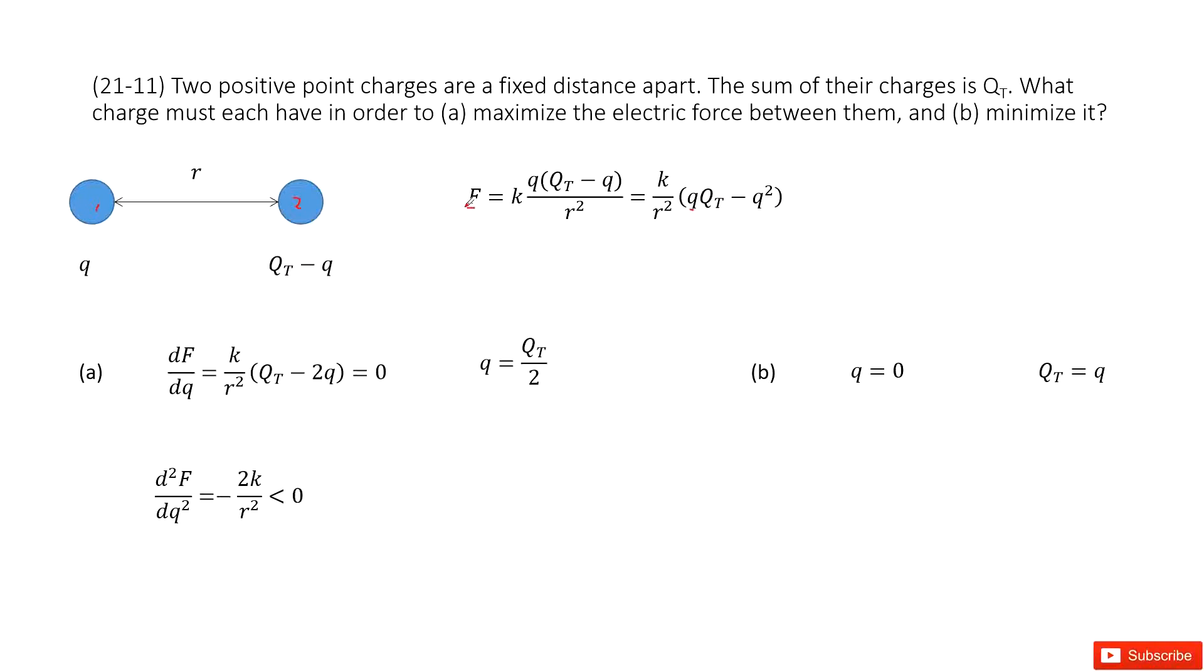So we can take a derivative. We use dF/dQ, and it must equal zero to reach the maximum point. And if we want to make this function equal to zero, the only choice is Q equal to half of Qt. So Q equal to half of Qt, we can get the maximum electric force.